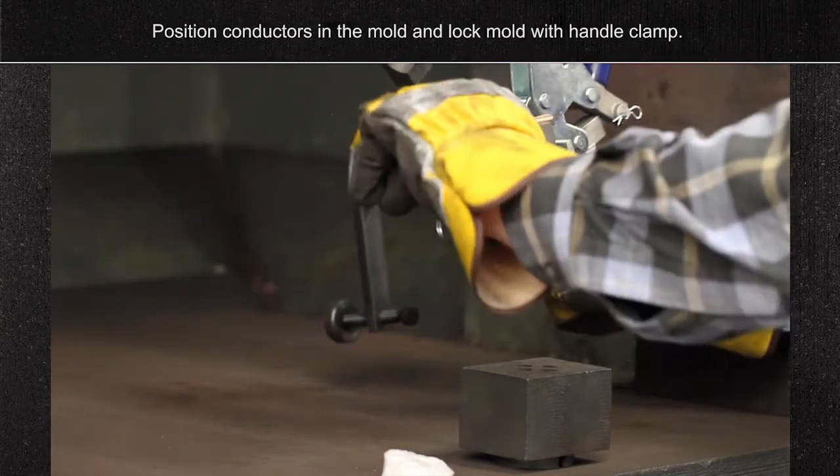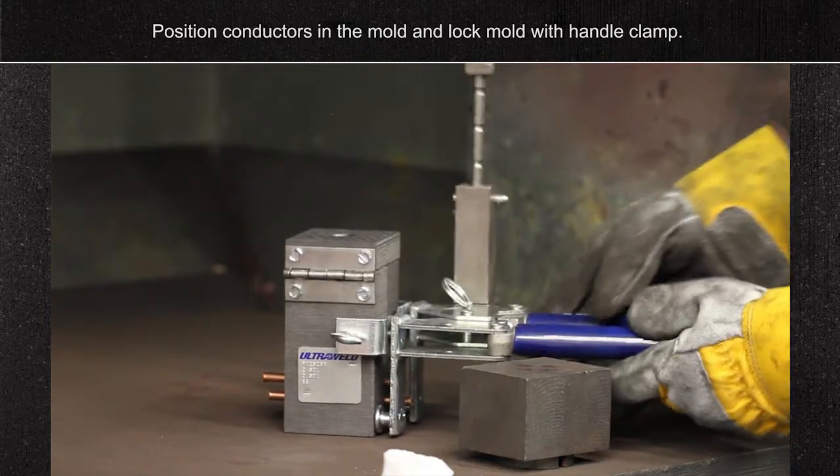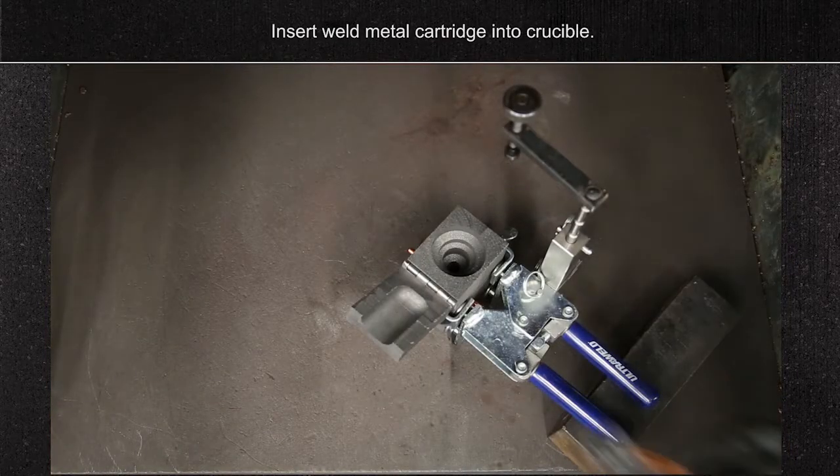Position conductors in the mold and lock the mold with the handle clamp. Insert weld metal cartridge into crucible.